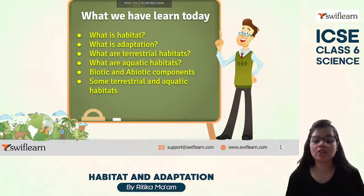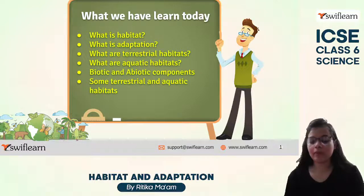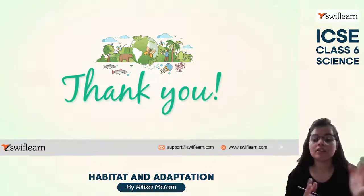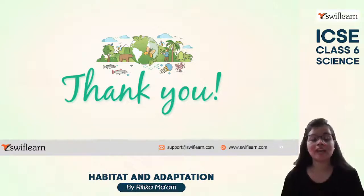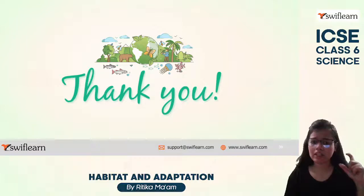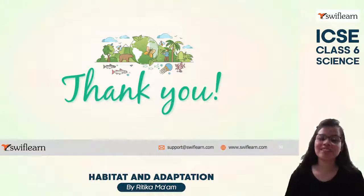So the things we have learned today are: habitat, adaptation, terrestrial habitats, aquatic habitats, and biotic and abiotic components. I hope all these things are very clear to you. We will take this chapter forward in our next session. Until then, keep revising and keep learning. Also, book your free trial class on Swift Learn — there are very few slots left, so please hurry up and have the amazing experience of Swift Learn classes. Thank you, see you in the next class.